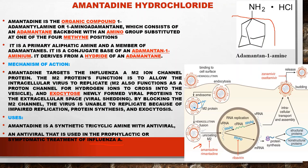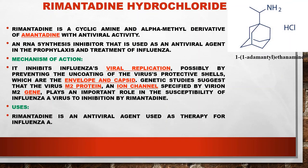The next antiviral agent is rimantadine. Compared to amantadine, rimantadine has a methyl group added at one position. Rimantadine is an alpha-methyl derivative of amantadine with antiviral activity. Its IUPAC name is 1-(1-adamantyl)ethanamine. The mechanism of rimantadine is the same: it inhibits influenza viral replication, possibly by preventing the uncoating of the virus's protective shells — the envelope and capsid.